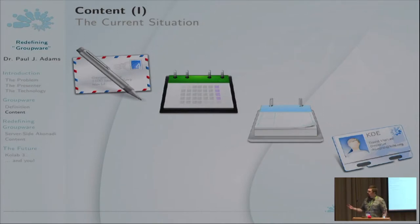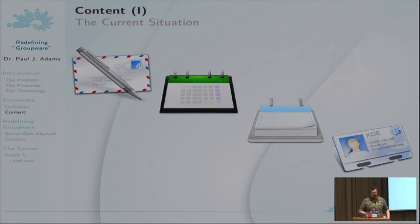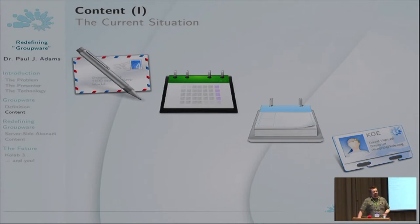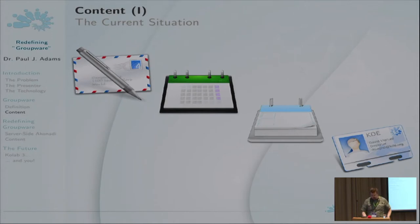The current situation — this is the classic PIM model. We have email, calendaring, to-do list, contacts. These things do not just sit by themselves — they have to work together. The example I always give is: you get an email inviting you to an event, you can create an event in your calendar from that email, and you can invite somebody from your contacts list to that event. This is the kind of way in which these things have to work together — they talk to each other.